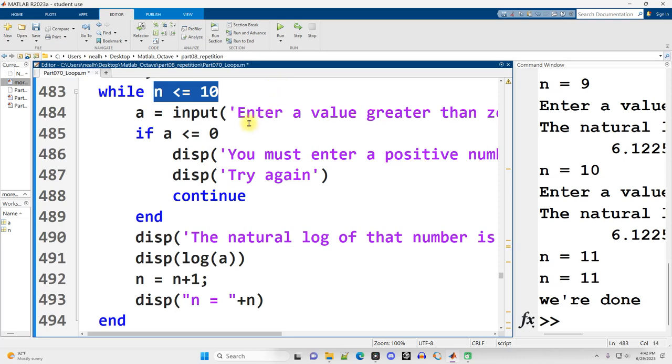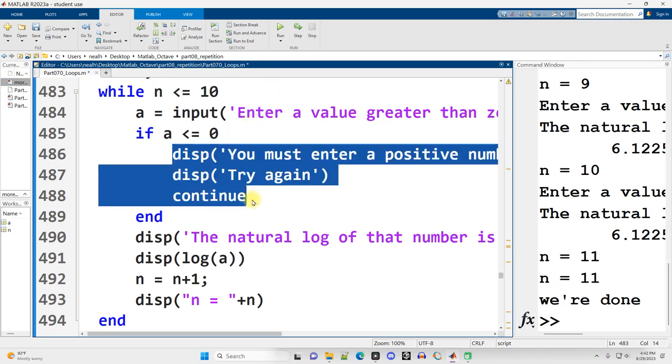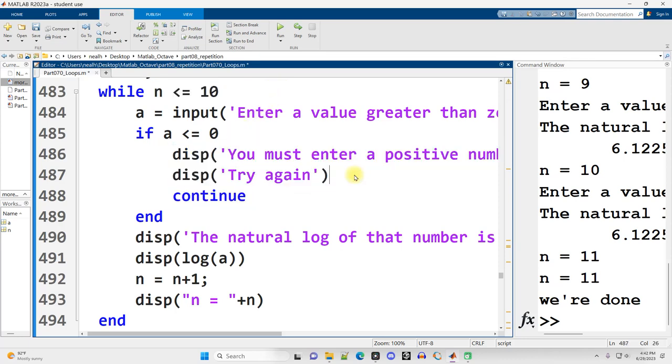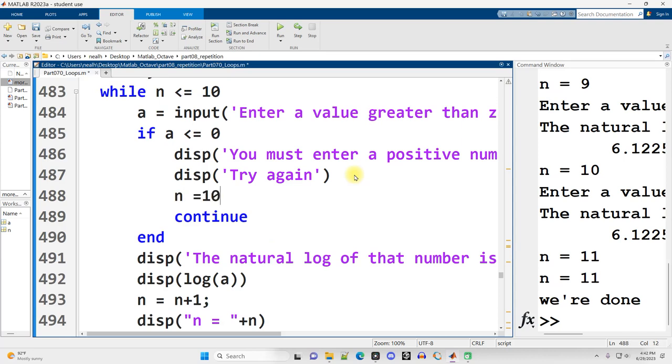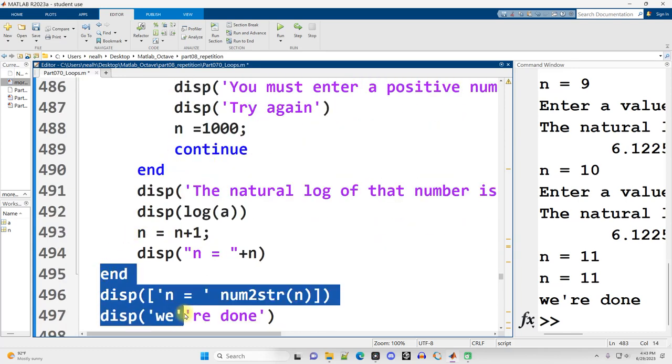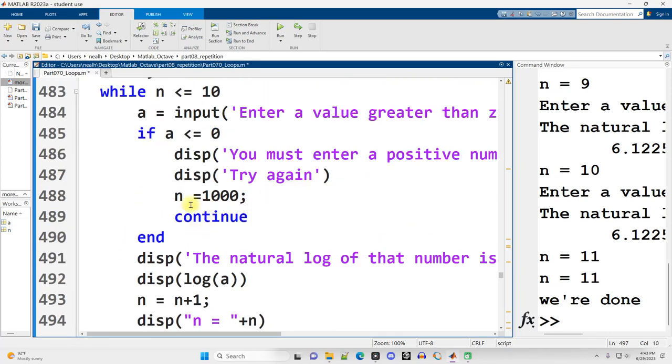The condition does get evaluated. If in here I made n equal to like 1,000, it would seem like this was a break. Because the continue would say go up to here, and we would check is n less than or equal to 10, and that would be false. And then it would jump down to the end. Now that would be silly. I mean, I could just put a break in here if that's what I wanted. But I wanted to let you understand.